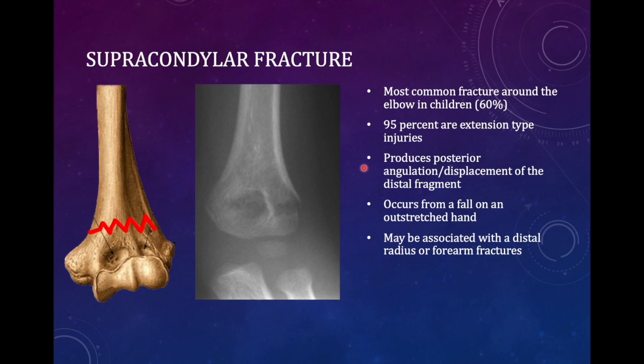Supracondylar fracture is the most common fracture around the elbow in children — 60% frequency, and 95% are extension type. In extension type, the distal fragment goes posteriorly; in flexion type, the distal fragment goes anteriorly. The most common variety is extension type; flexion type is rare. Whenever there is an extension type of injury, there will be posterior angulation and posterior displacement of the distal fragment.